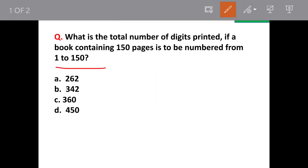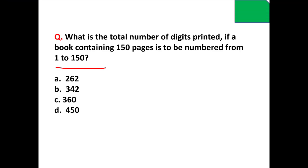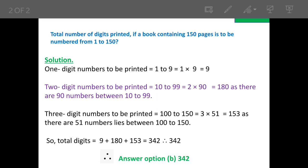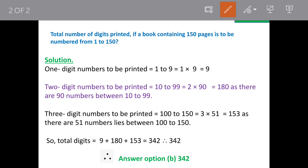This is the question. So we'll count the digits in the following manner: firstly we'll count single digit numbers, then 2-digit numbers, and then 3-digit numbers. So how many single digit numbers are going to be there? Pages 1 to 9 will be single digit numbers and there are going to be 9 such digits.